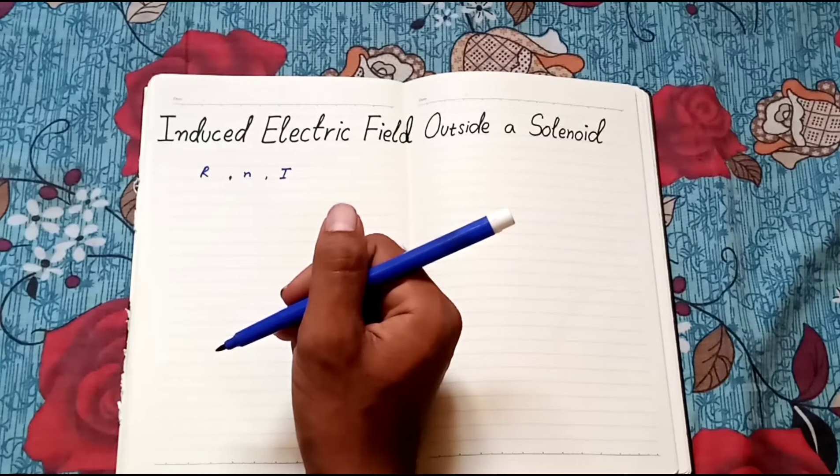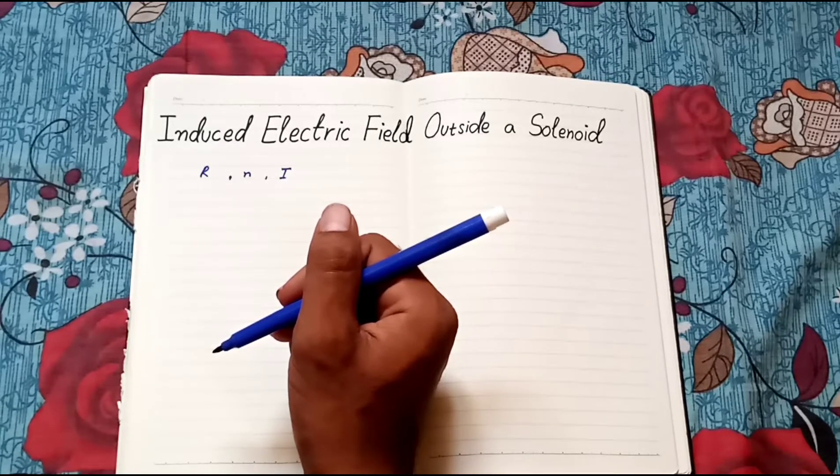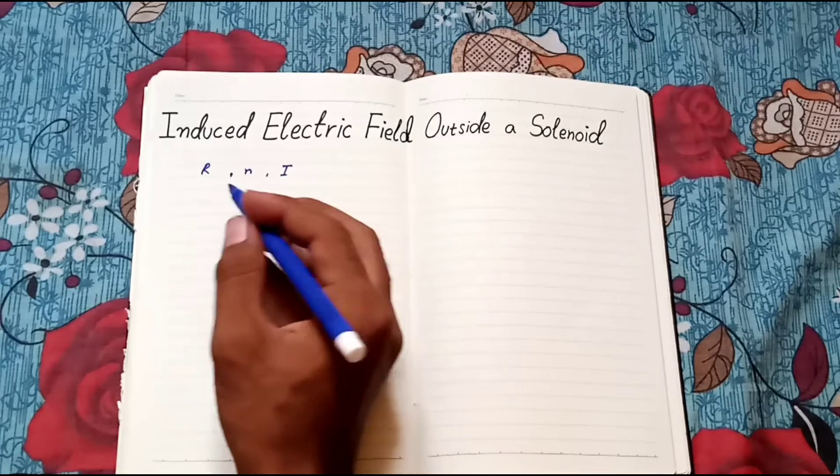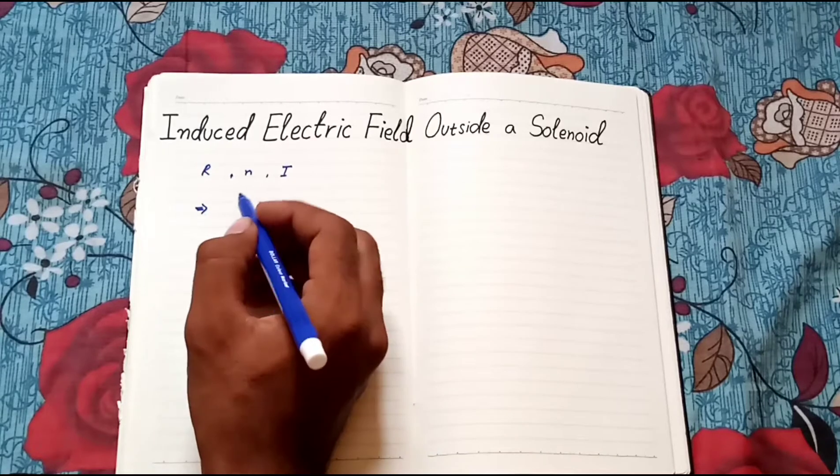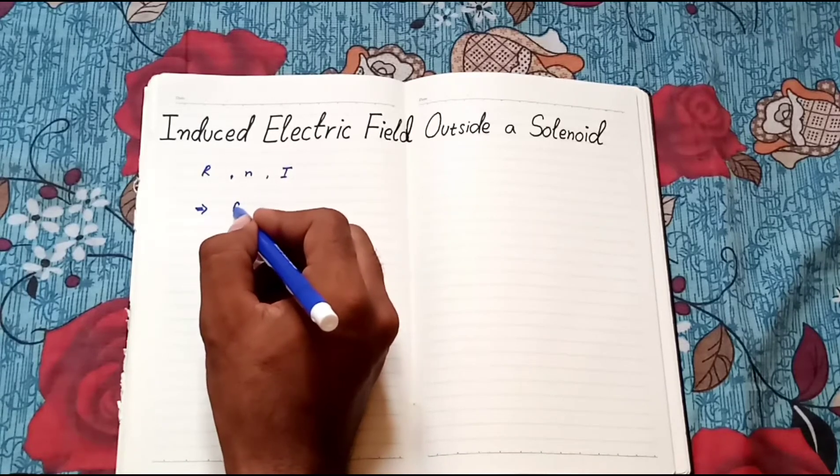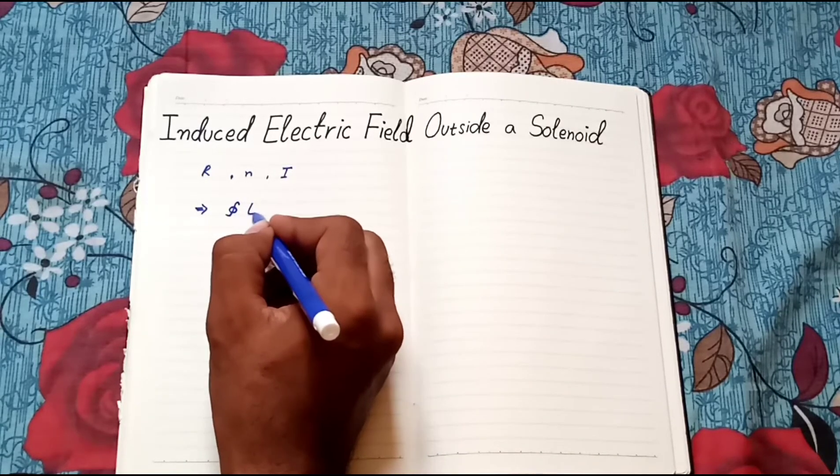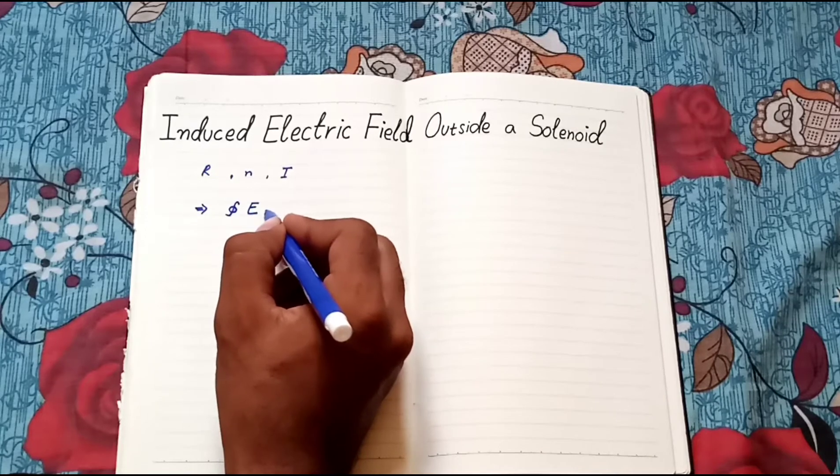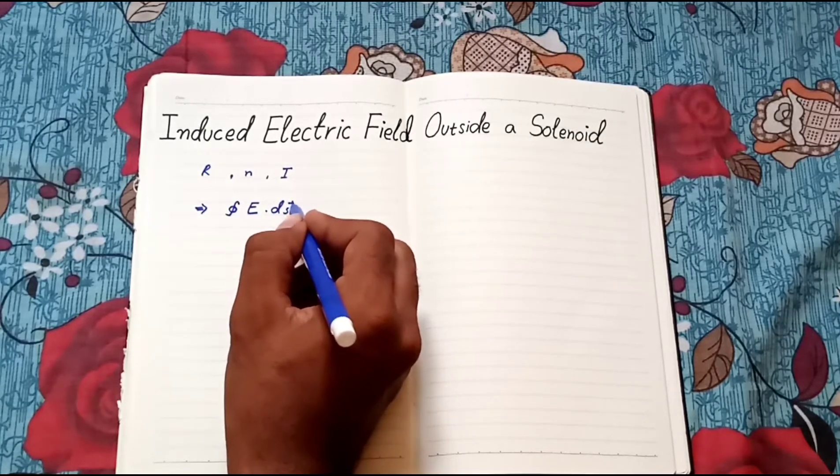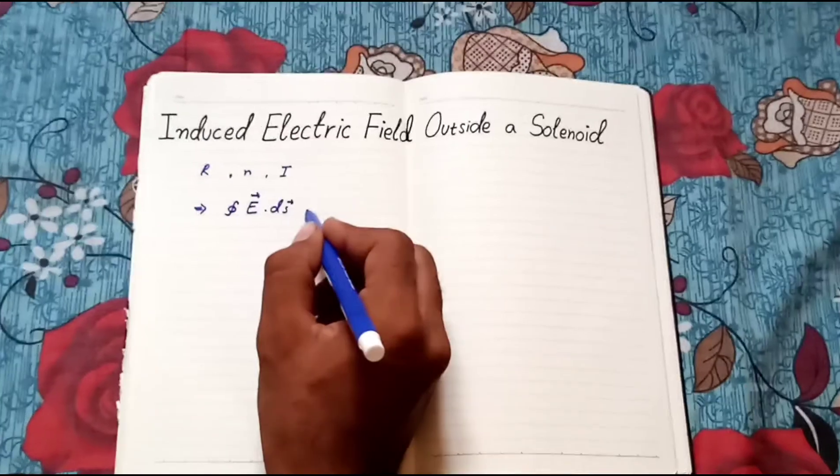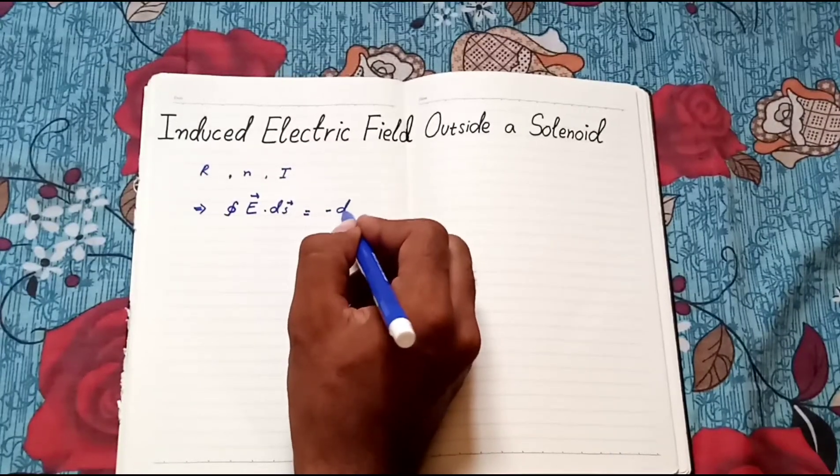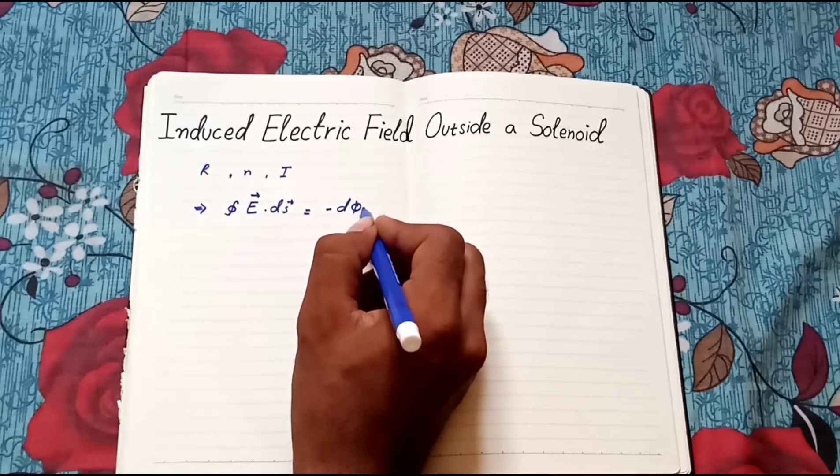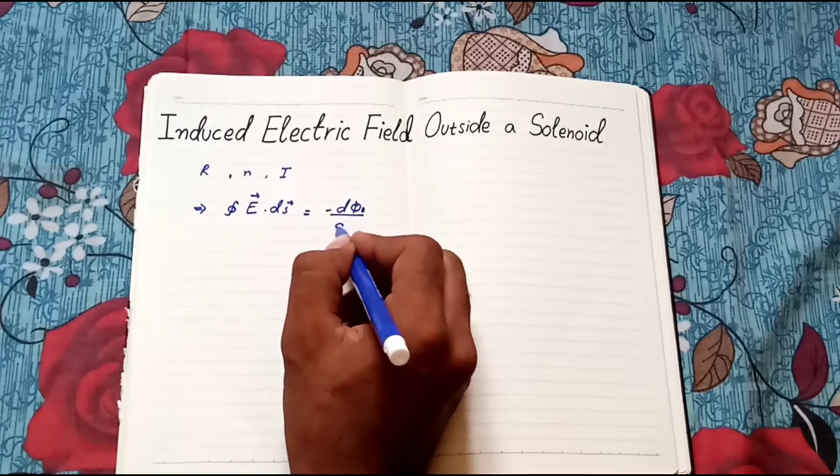We will start our derivation by using equation of induced electric field which we have learned in our previous video, which is closed integral E.ds equals minus d magnetic flux upon dt.